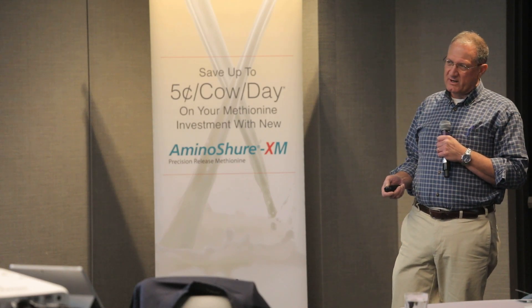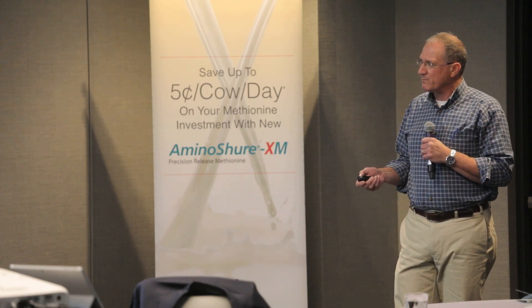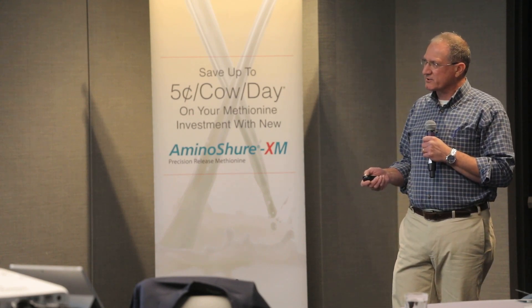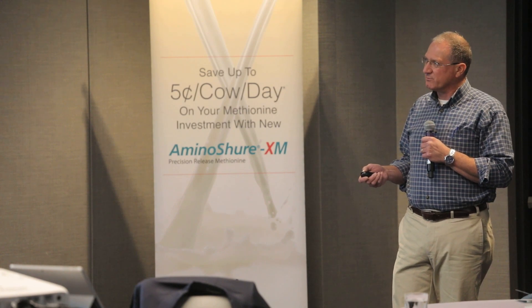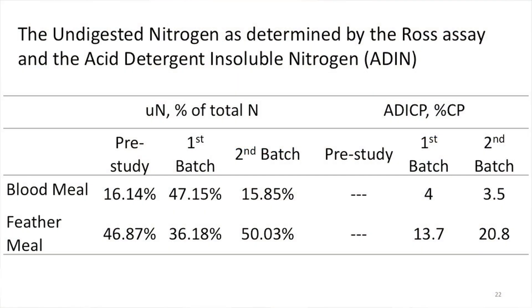You run through the study going 'I don't understand,' and I'm not very happy because the cows aren't following the script. Then we analyze the blood meal. We went from 16% indigestible prior to the study — the first batch that went into the mix was 47% indigestible. Well, that'll screw your study up. And the feather meal was actually more indigestible than the blood meal. That really screws your study up.